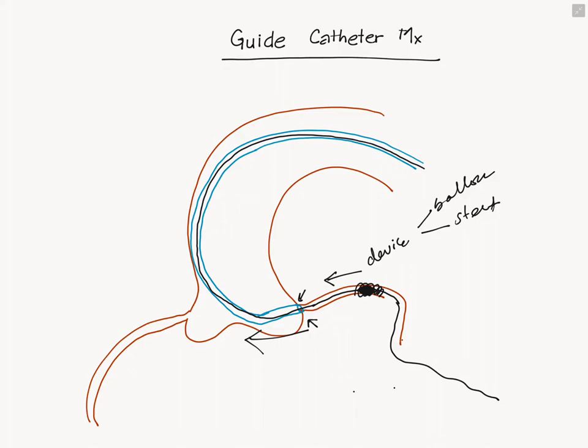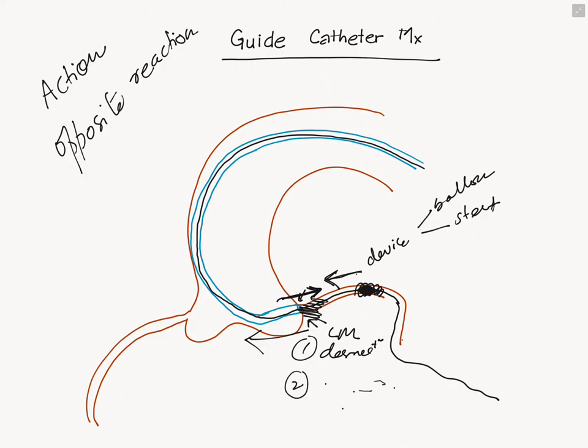This is a law of energy - every action has an equal and opposite reaction. When you're trying to pull that device out, your guide is going to get sucked back in reaction. A couple of things can go dangerously wrong. It can literally dissect your left main, which would be horrible. If you had a previous stent or just placed a stent in the left main ostium, it can cause longitudinal stent deformity.